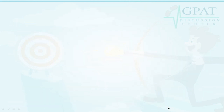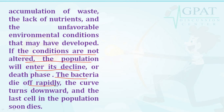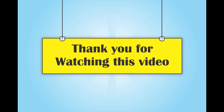Reasons for bacterial death in the stationary phase include accumulation of waste, lack of nutrients, and unfavorable environmental conditions. If conditions are not altered, the population will enter its decline or death phase — the bacteria die off rapidly, the curve turns downward, and the last cells in the population soon die. The phases in sequence are: lag phase, log (growth) phase, stationary phase, and finally death phase.